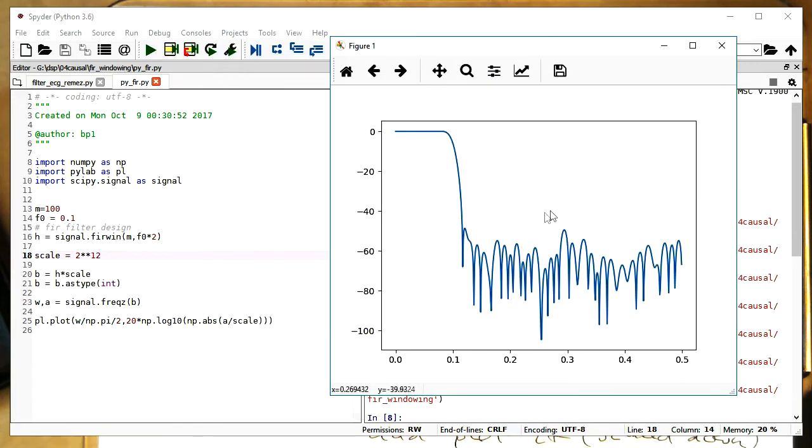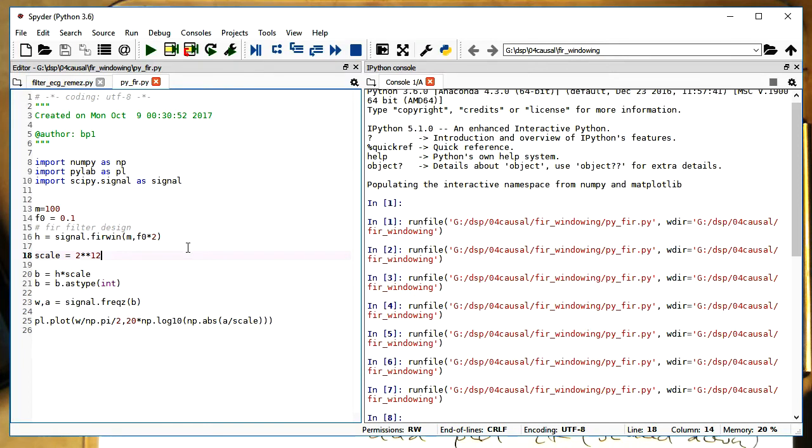That's the performance of our filter at 12-bit resolution. We see here it jumps roughly down to 50 decibel here. And then it's just going wildly up and down here.